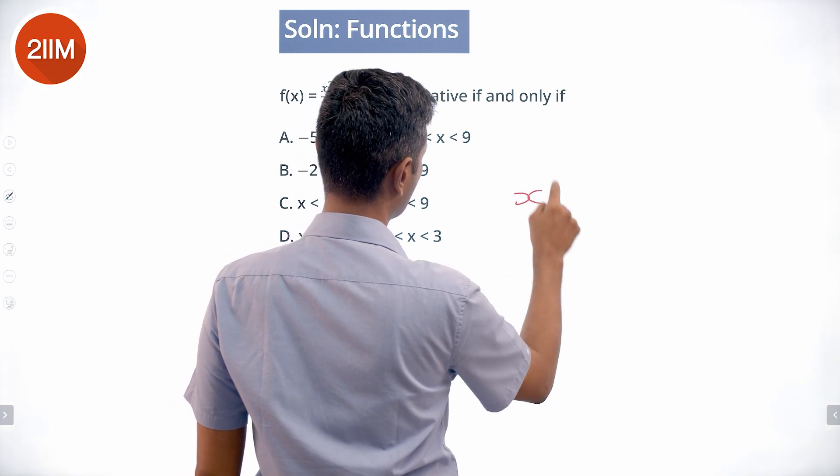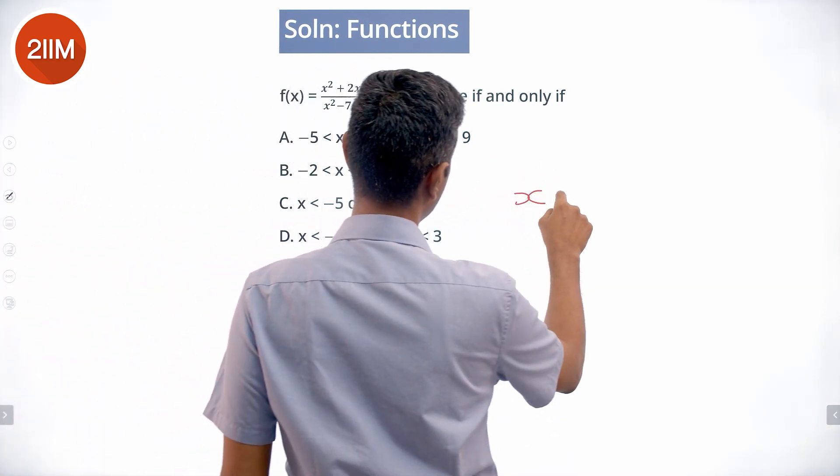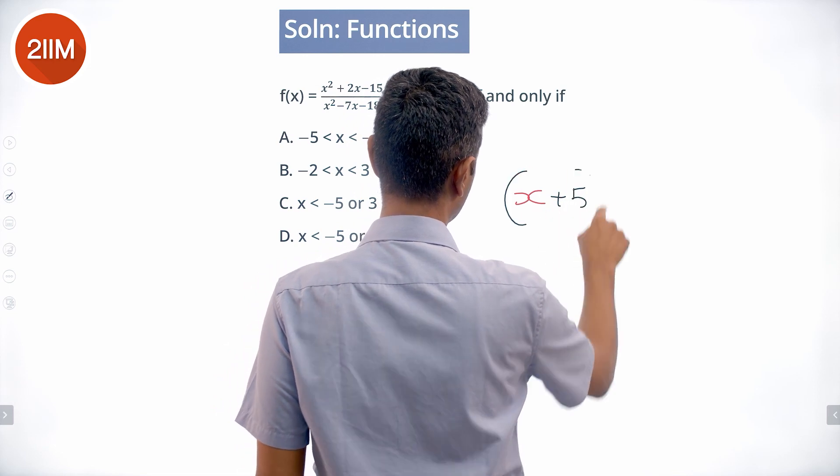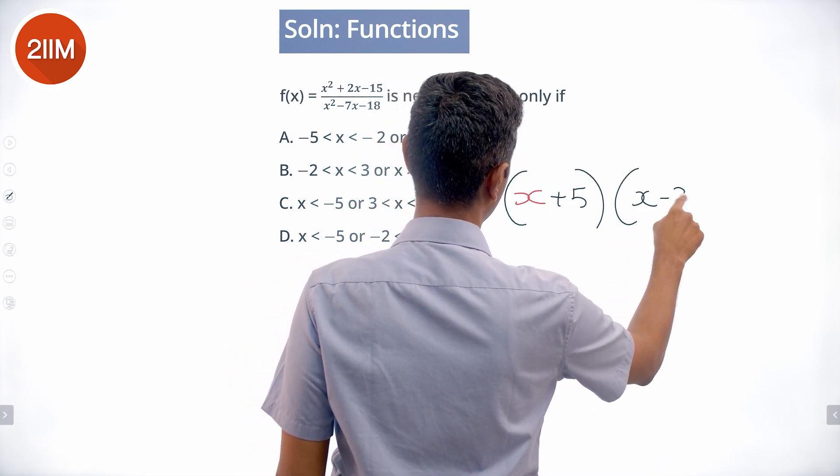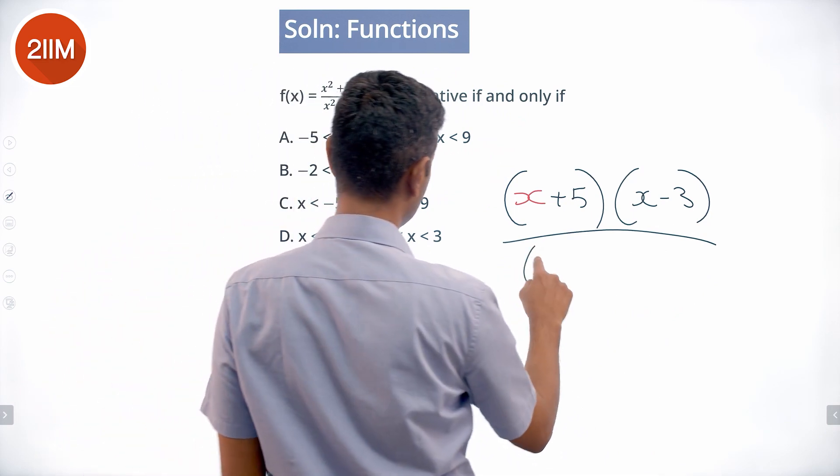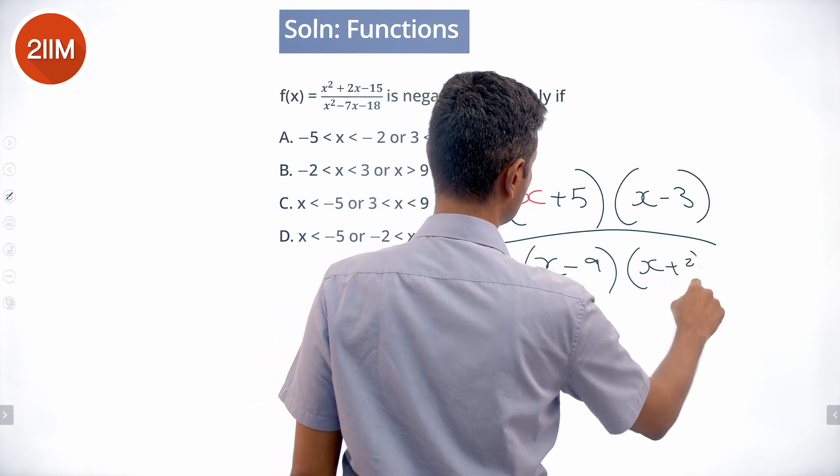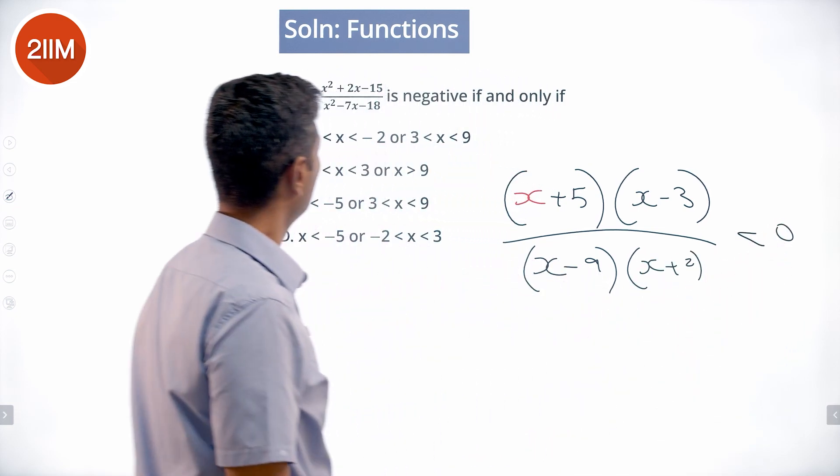Factor the expressions: x² + 2x - 15 becomes (x + 5)(x - 3), and x² - 7x - 18 becomes (x - 9)(x + 2). So we have [(x + 5)(x - 3)]/[(x - 9)(x + 2)] < 0.